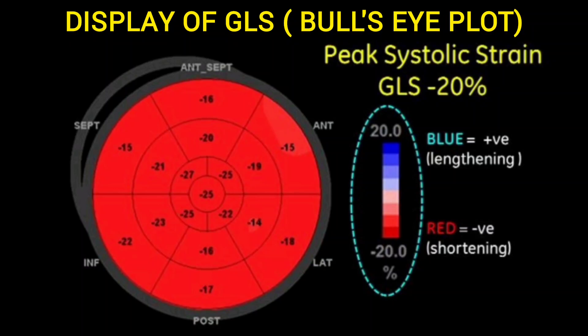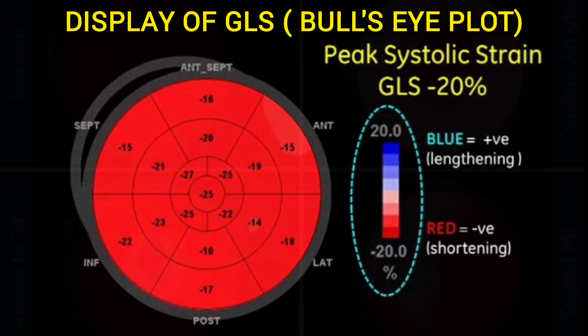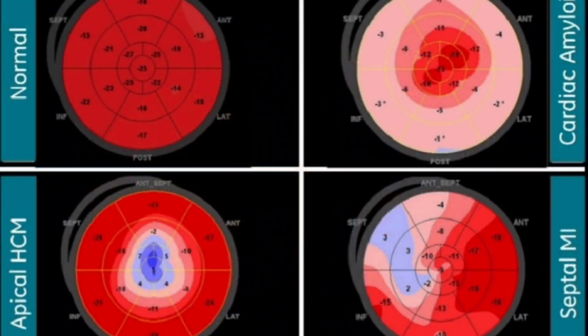As you can see in the color scale, red color illustrates normal systolic shortening, whereas lighter shades of red and blue denote reduction in systolic shortening. Here are some examples where you can see reduction in systolic shortening in some of the regions of the LV.